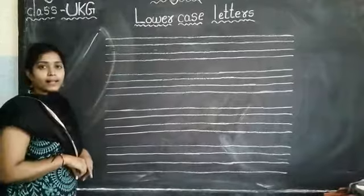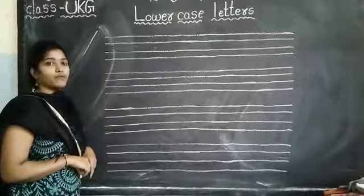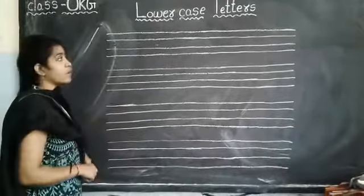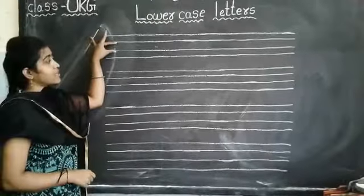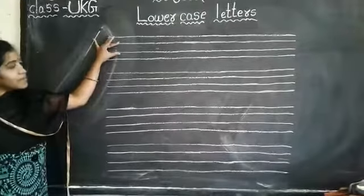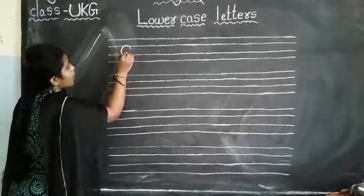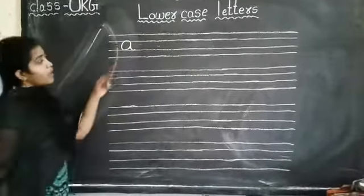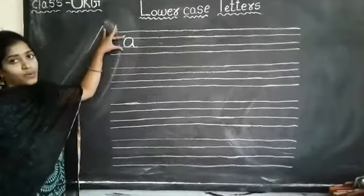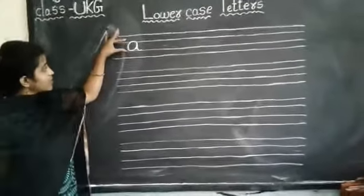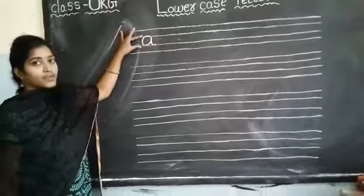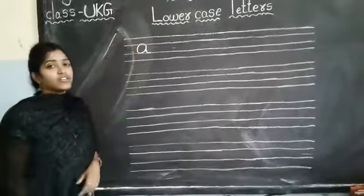So first letter comes, small a. Very good. So small a, how many lines? Can you see these lines in the middle? These two lines have to write. Small a. See how I wrote in these two lines. Please children, touch these two lines and write.